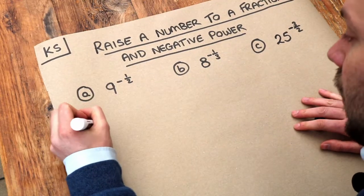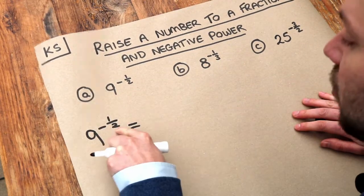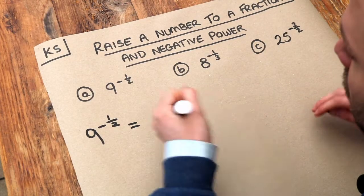So let's first look at 9 to the power of minus a half. We've got the fractional and the negative power to deal with. Which one do we do first?